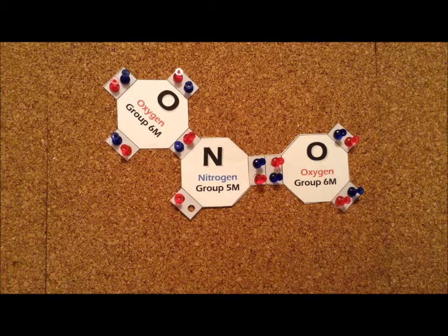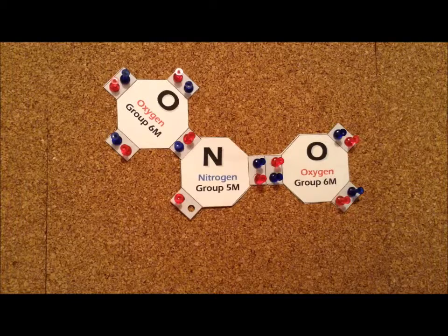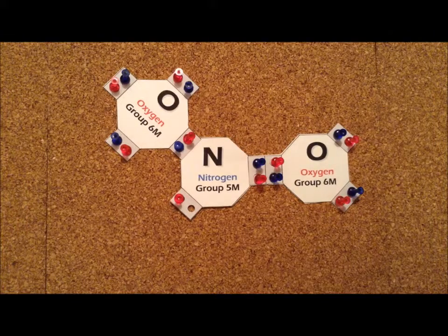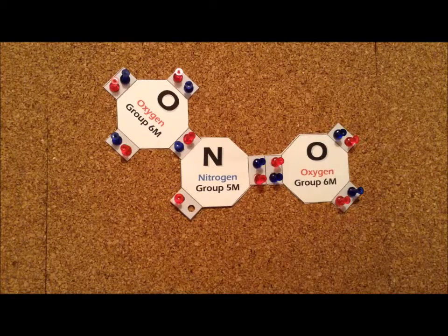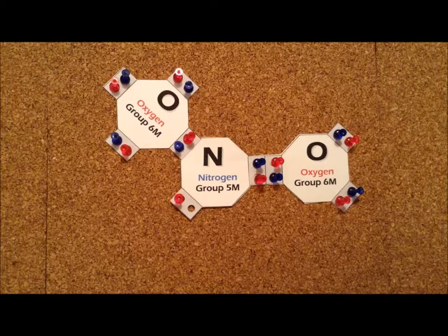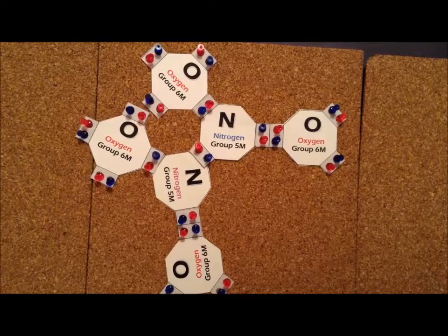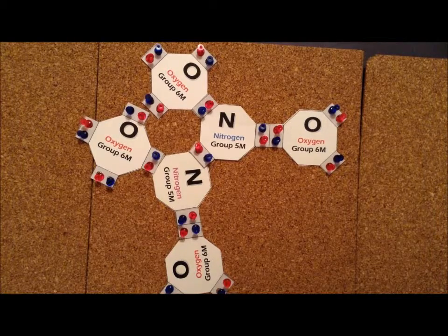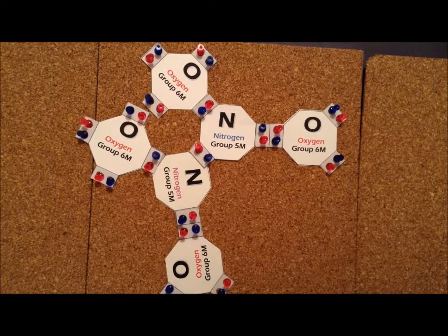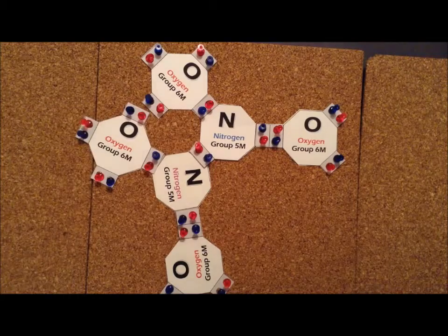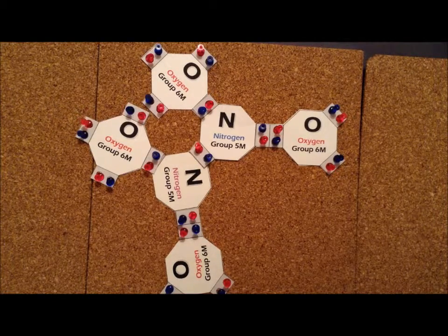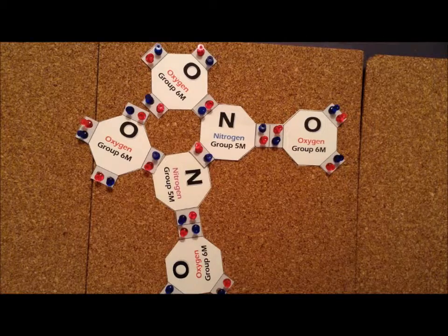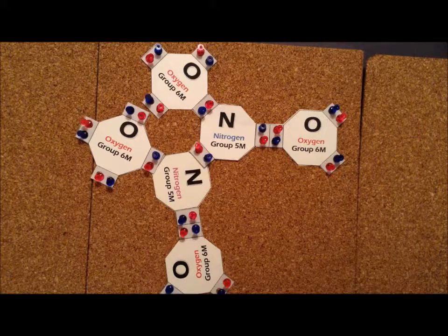But the more common mechanism is for nitrogen dioxide to dimerize. And let's look and see what product we get when nitrogen dioxide dimerizes. By linking two nitrogen dioxide molecules together, we can form a new compound, which has the chemical formula N2O4, and which goes by the name of dinitrogen tetraoxide.